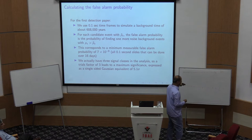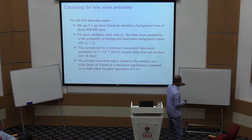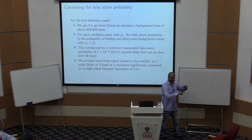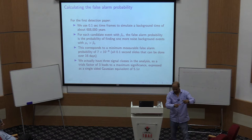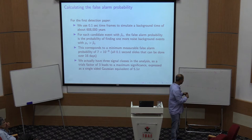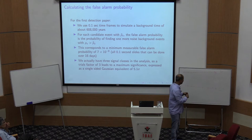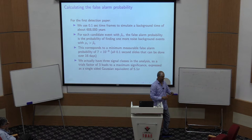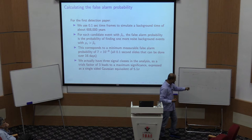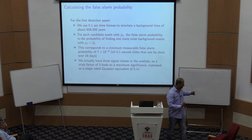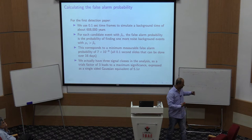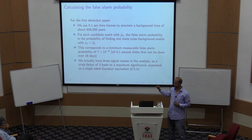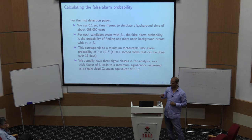To estimate the background, we take the list of candidates from Hanford and Livingston and shift one in time by an amount larger than the light travel time between the two detectors. Any coincidence found after such a time shift cannot be a real event. By repeating this for many different time shifts, we build up a list of background events and their distribution of detection statistics.